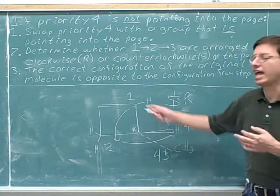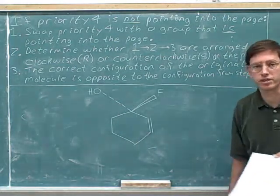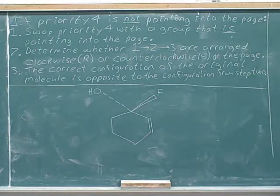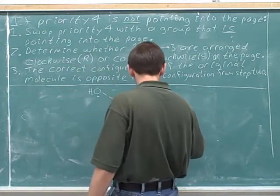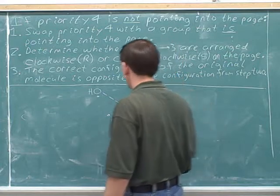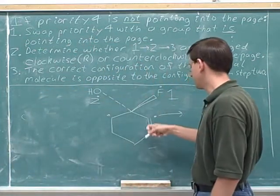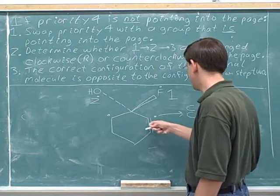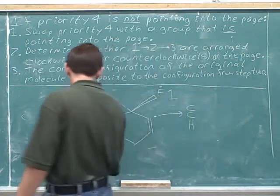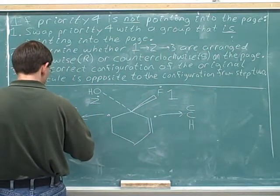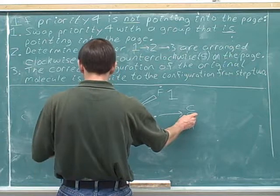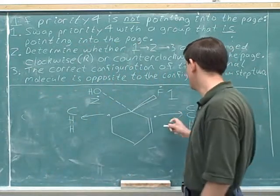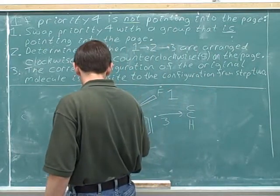Let's determine the configuration at this next stereocenter. Fluorine gets the number one priority. Oxygen gets the number two priority. The carbons are tied. The carbon on the right is double bonded to a carbon, which counts as two carbons, and there's a hidden hydrogen. The carbon on the left is bonded to a carbon, so there must be two hidden hydrogens. The first point of difference is that this carbon beats the hydrogen on the left, so the right-hand group is number three priority and the left-hand group is number four priority.